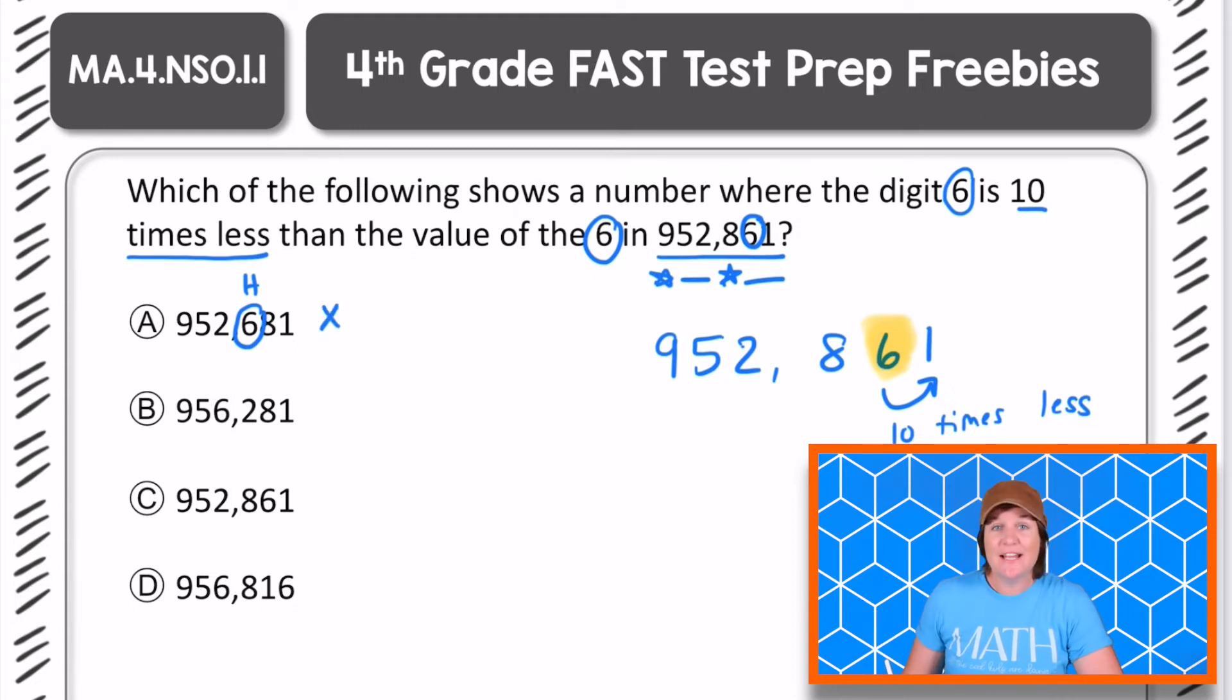Next, 956,281. Is that digit 6 in the ones place? No. So it's not 10 times less than the original number. So we can eliminate that one too.